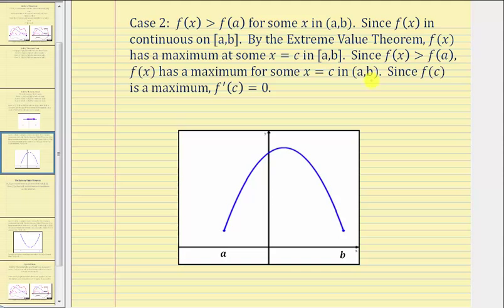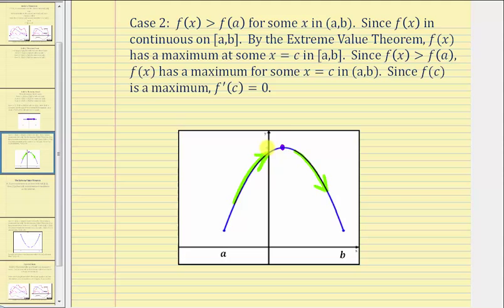And since f of c is a maximum, we know f prime of c would be equal to zero. To illustrate case two, if f of x is greater than f of a for some x in the open interval, the function would have to be increasing at some point in the interval. But because f of a equals f of b, the function would also have to be decreasing back down to f of b. By the extreme value theorem, we know we have a global or absolute maximum at some x equals c, and if this is the maximum, the slope of the tangent line would be zero, and therefore f prime of c equals zero.